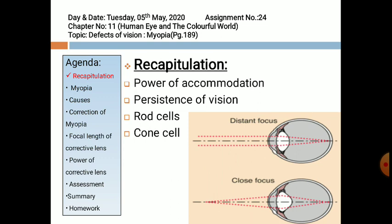Rod cells: light sensitive cells which enable us to see in dim light are rod cells. Cone shaped cells: these cells are sensitive to bright light and cause the sensation of colors in our eyes.